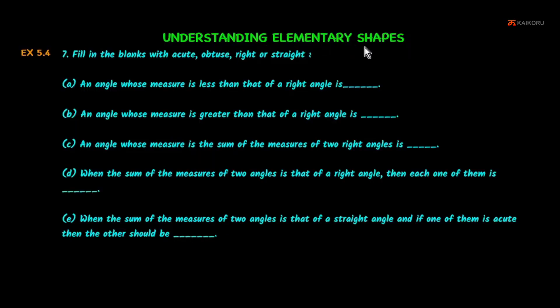This is the standing elementary shapes exercise 5.4 problem number 7. Fill in the blanks with acute, obtuse, right, or straight. We need to fill in the blanks using the angle type options: acute, obtuse, right, or straight.